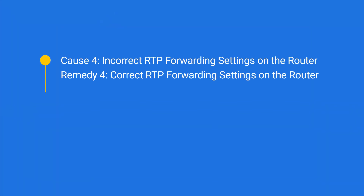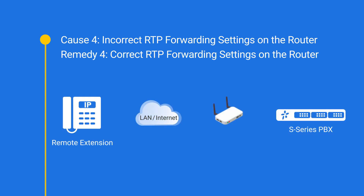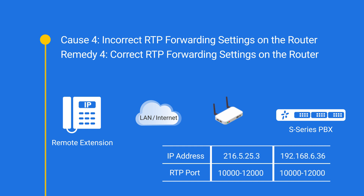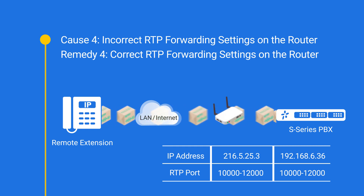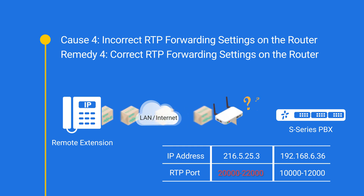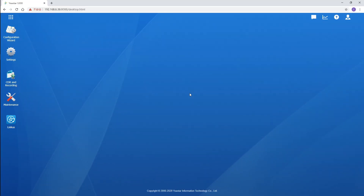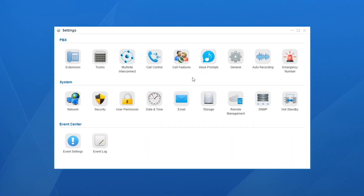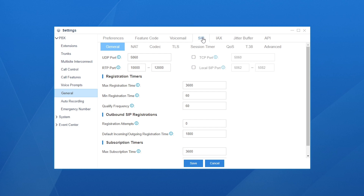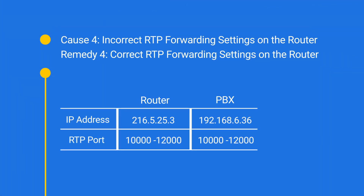For the fourth cause — incorrect RTP port forwarding — RTP port forwarding ensures that RTP packets from the remote extension can reach the PBX behind the router. If configured incorrectly, the router won't forward the RTP packets to the PBX. To correct the port forwarding, refer to your router's user guide. To check the RTP port range on the PBX, go to Settings, click PBX, then General, select SIP, and find the range. By default it is 10,000 to 12,000. The port forwarding should be symmetric — most routers support symmetric port forwarding by default.